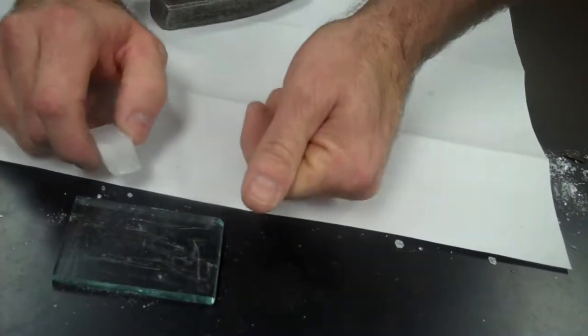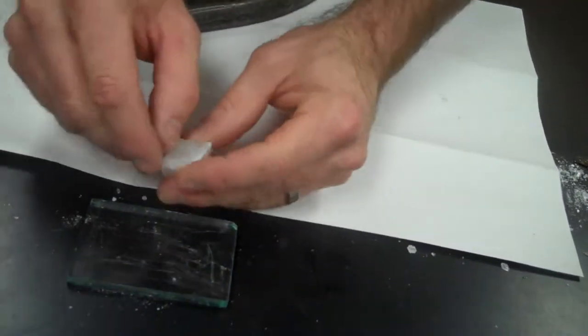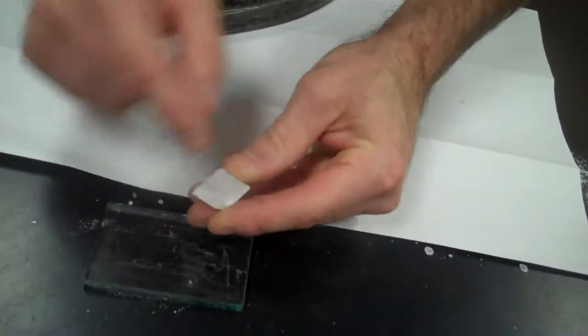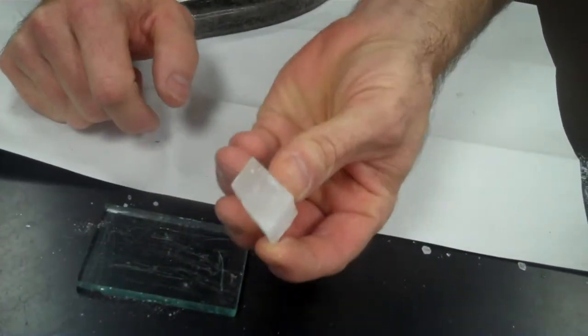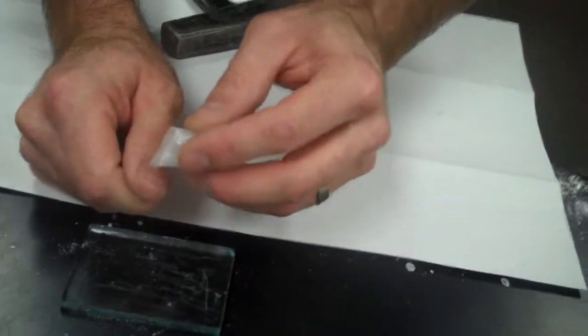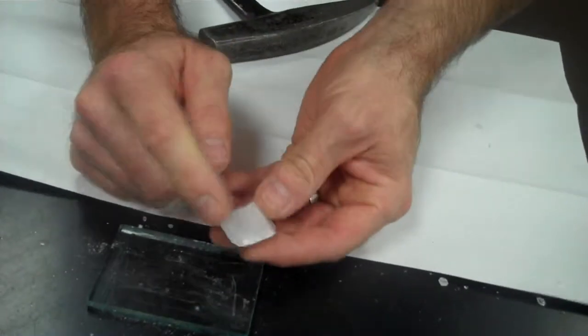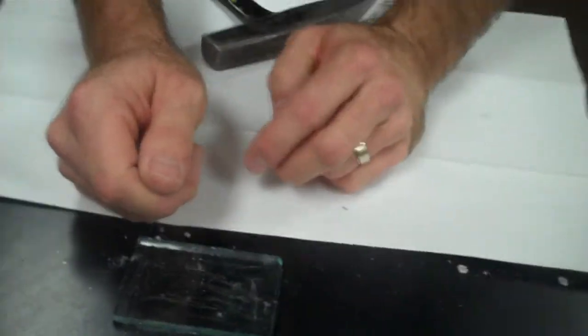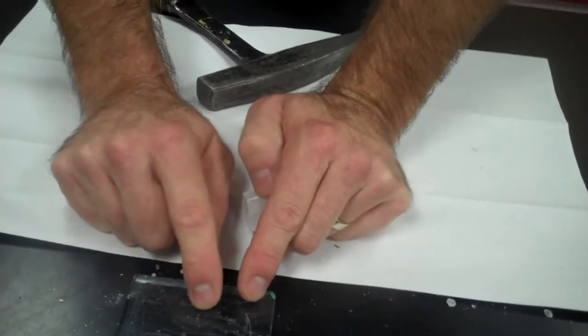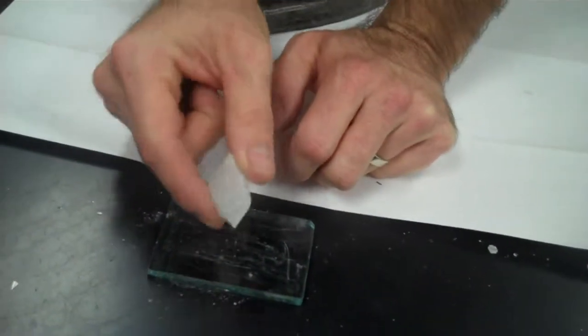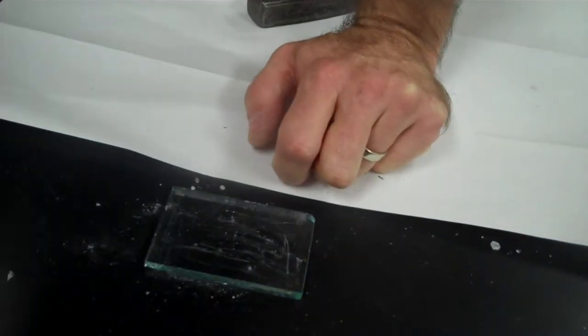than the glass. Your fingernail is at about a 2, 2.5. So if you can scratch the mineral and leave scratches on it, then the mineral is softer than your fingernail. If you scratch your fingernail, and I can see scratches on my fingernail, that means that this mineral is harder than 2.5, but it's less than 5.5. So we can narrow down our hardness using that.